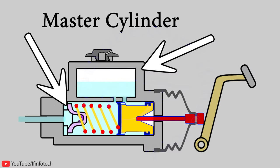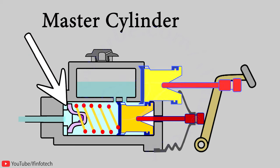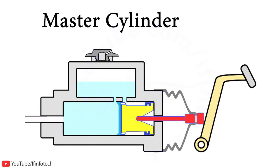In master cylinder, there are two chambers: fluid reservoir chamber and compression chamber. Fluid reservoir chamber is used to maintain amount of fluid inside the compression chamber, and in compression chamber there is a piston which is used to compress the fluid.